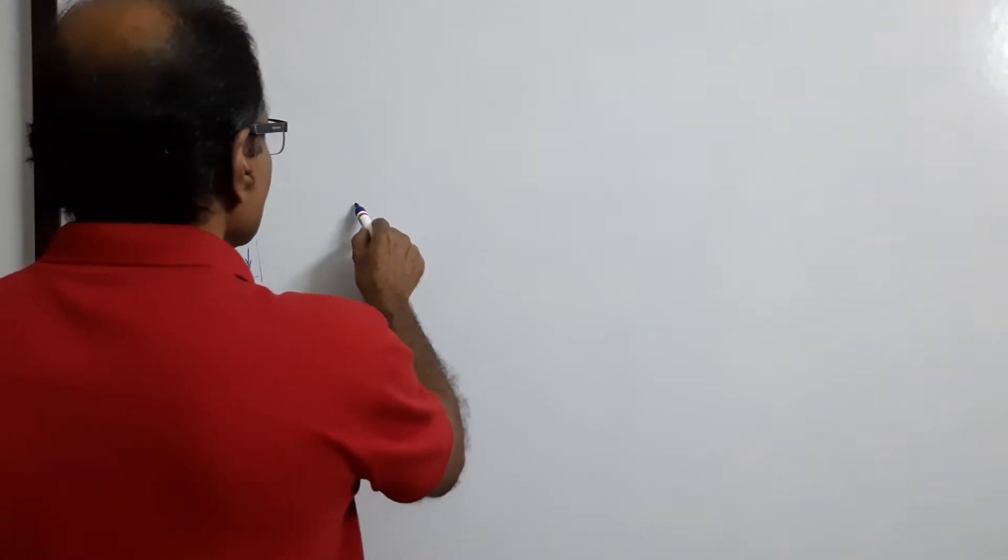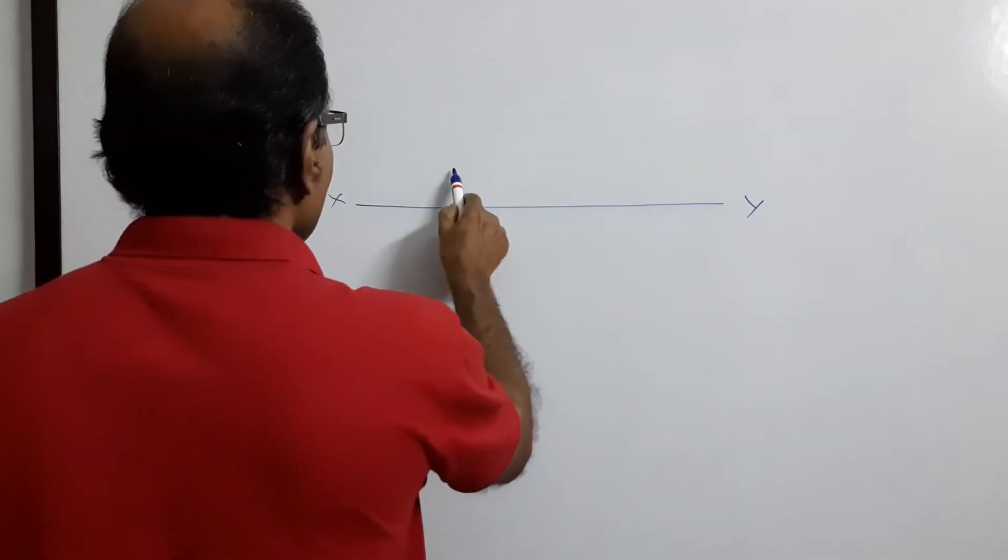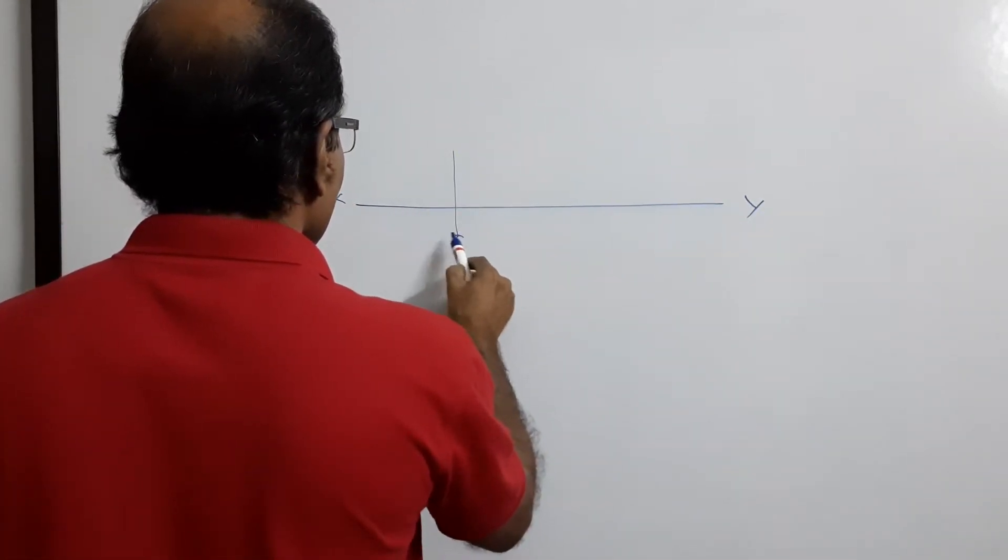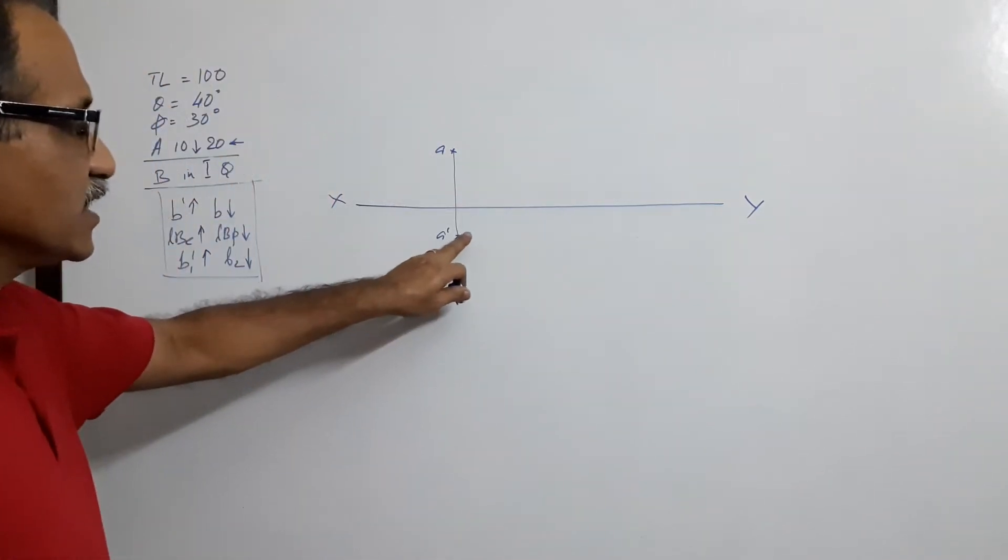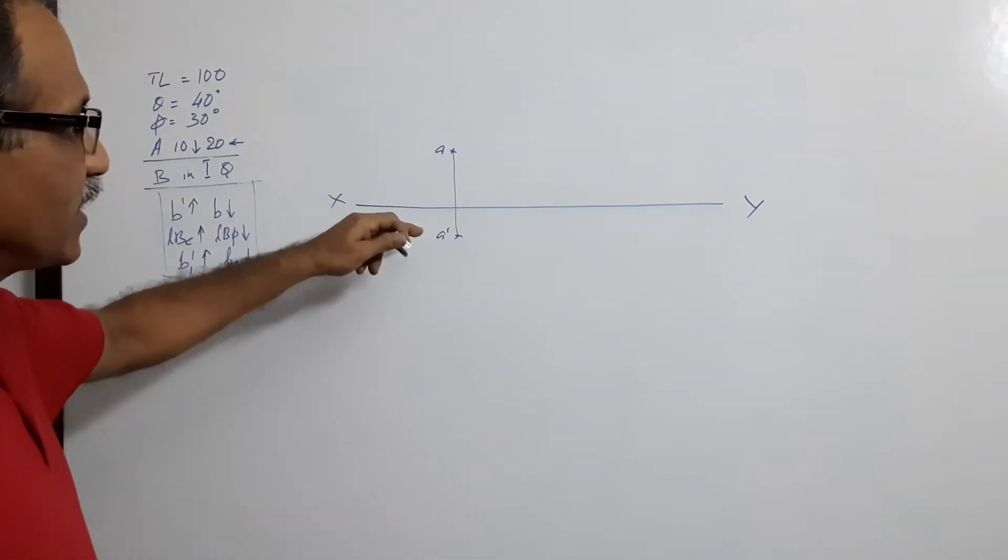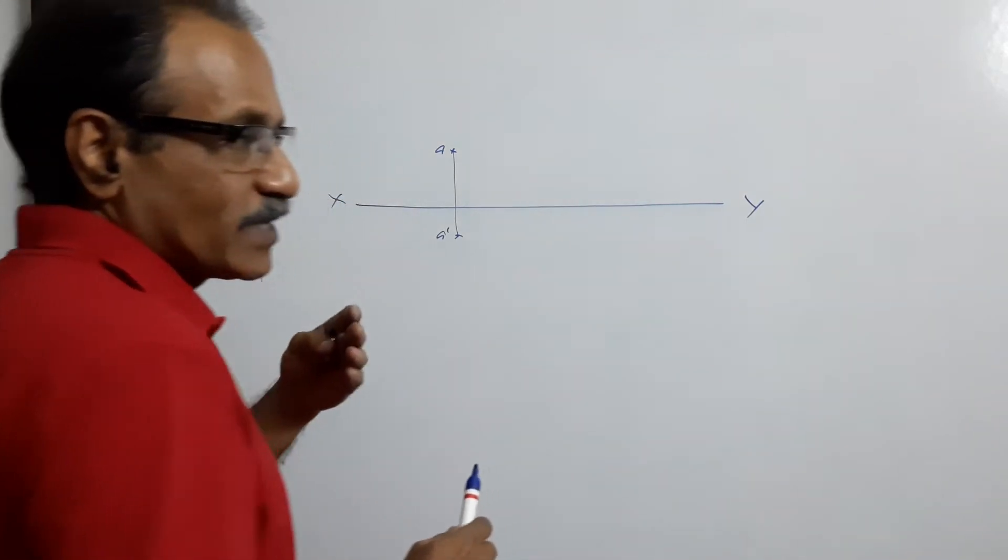Same procedure - draw the XY line. Point A dash is 10 mm below XY and point A is 20 mm above XY.